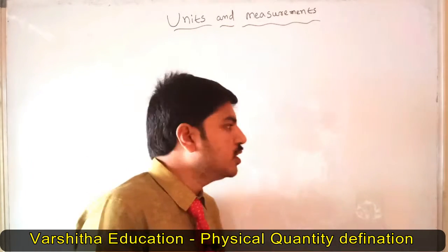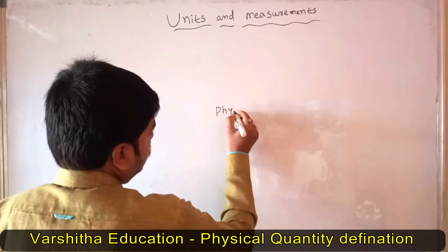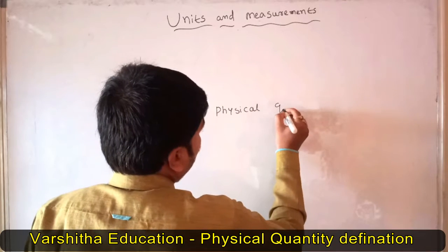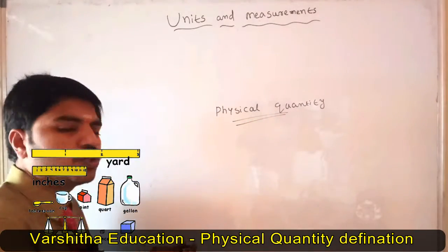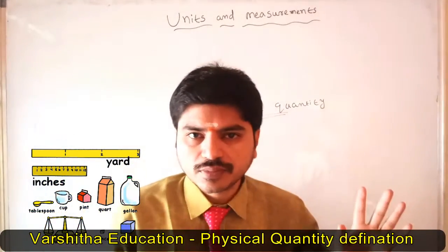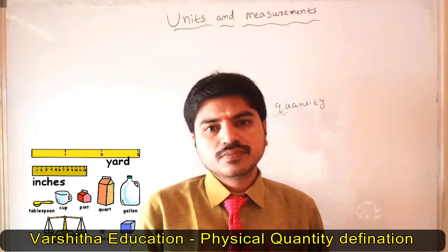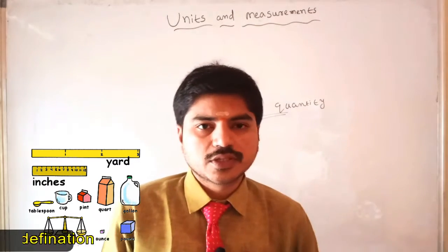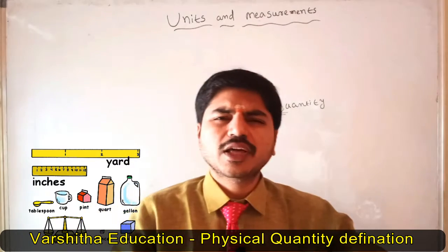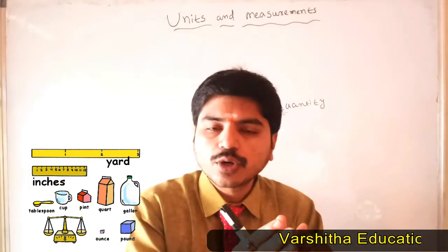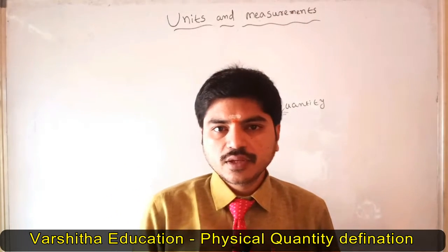What is meant by physical quantity? A physical quantity is something which occupies space in nature. For example, our body occupies some space in nature, and so do our books and a table. Everything you can observe with your eyes is occupying some space in nature, so each and every such thing is a physical quantity.